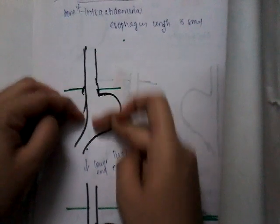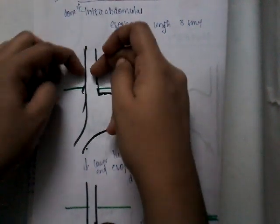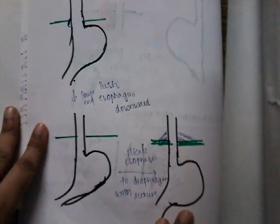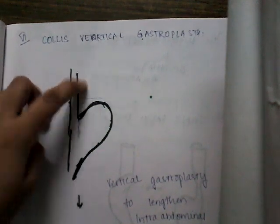The next operation is Belsey Mark 4 operation, which is specifically done when the intra-abdominal esophagus length is very small. In this procedure, we push the thoracic part of the esophagus downwards into the abdomen, and then we plicate the esophagus to the diaphragm. Suturing the esophagus to the diaphragm results in increasing the length of intra-abdominal esophagus. This is Belsey Mark 4 operation.